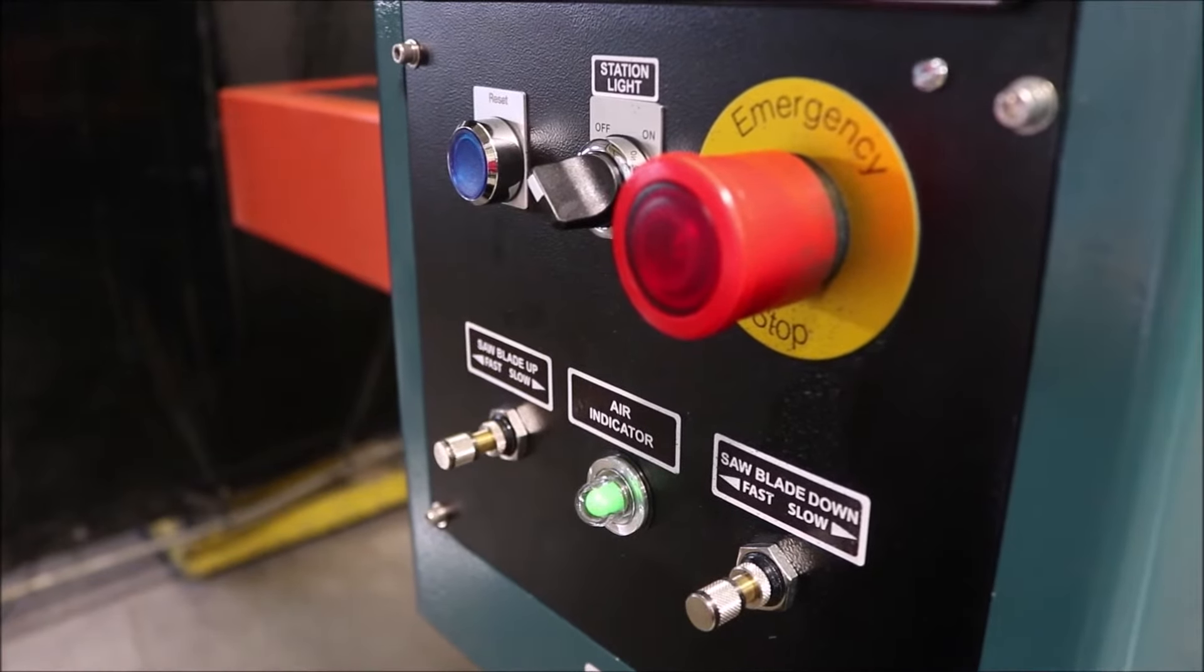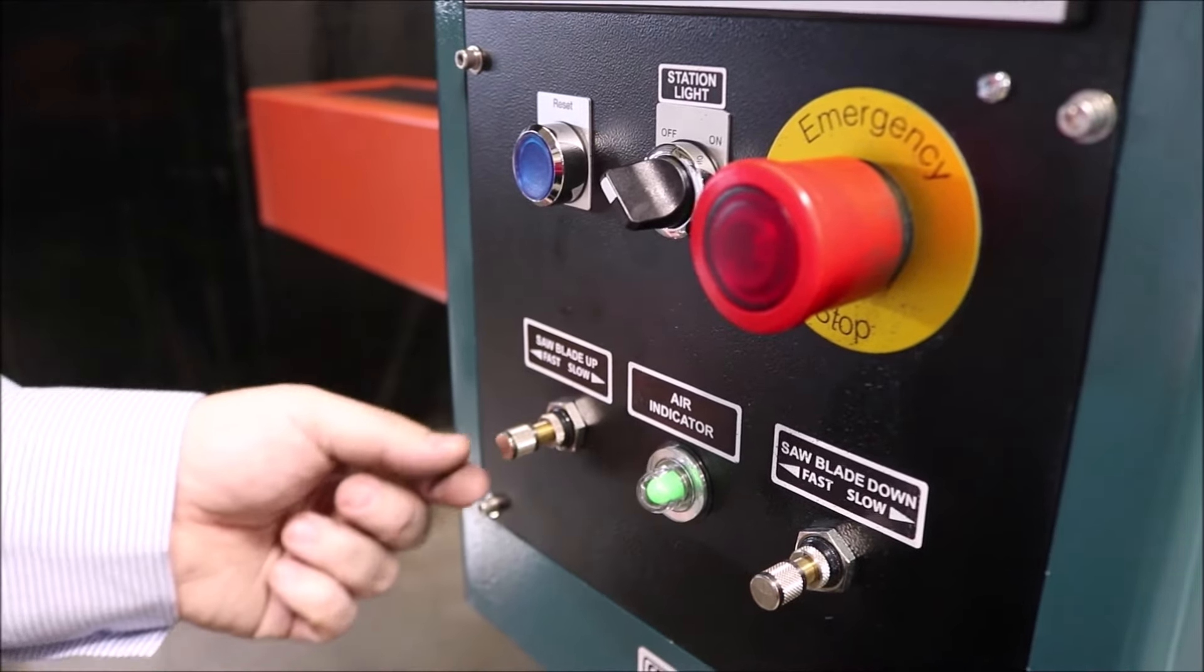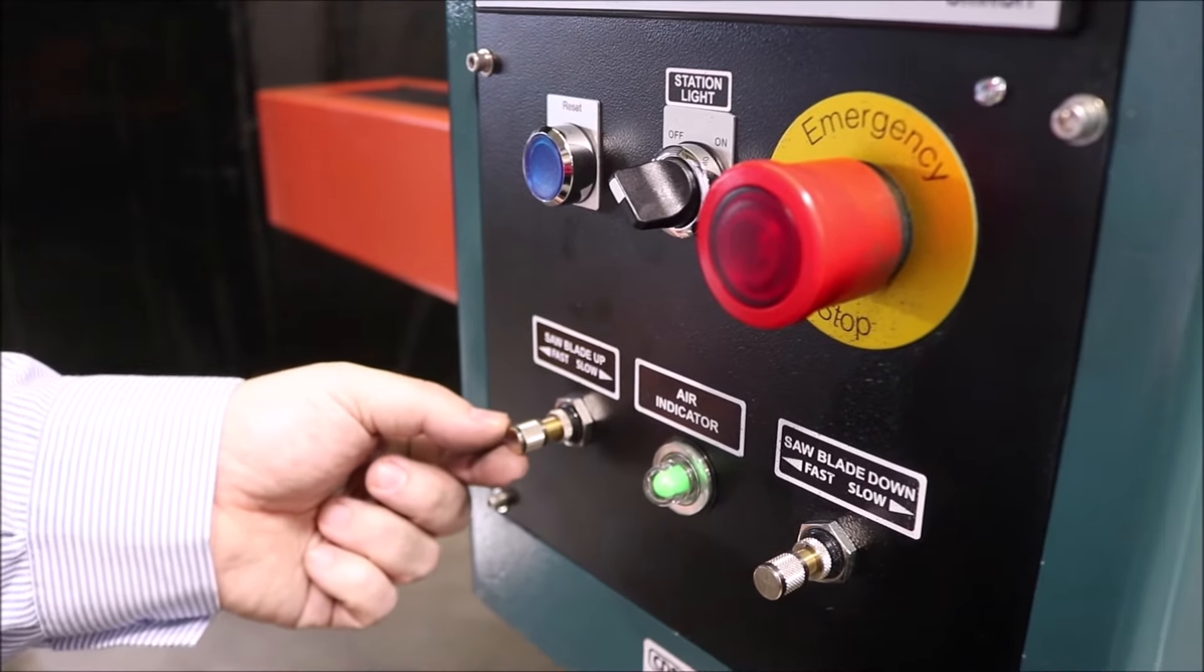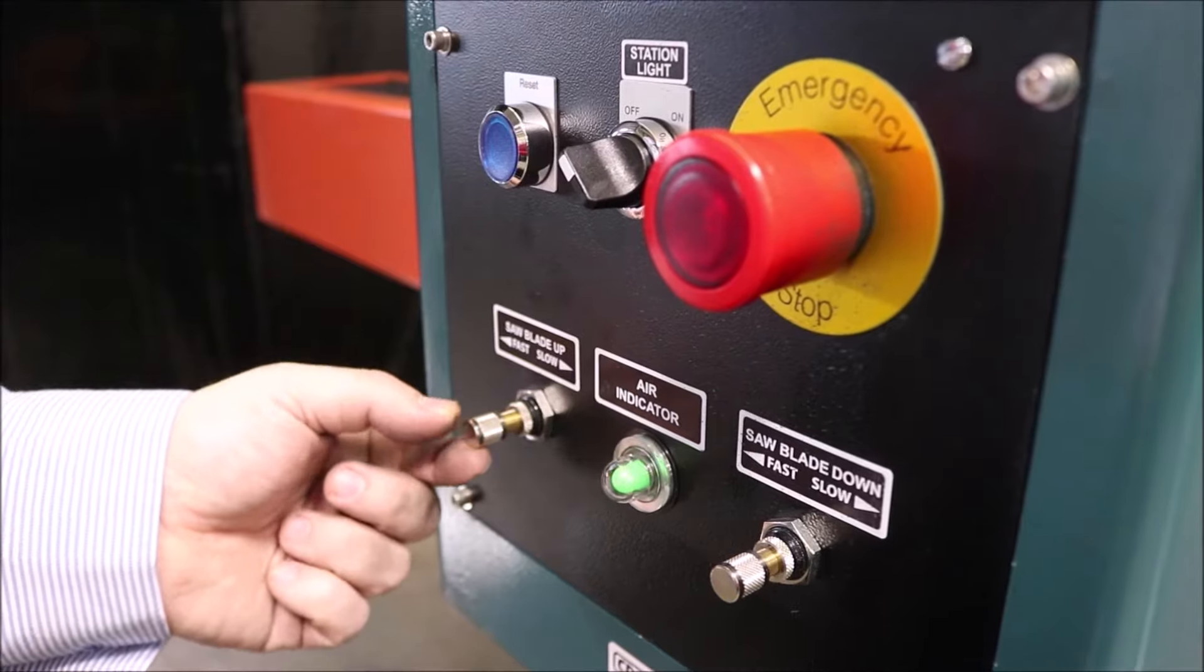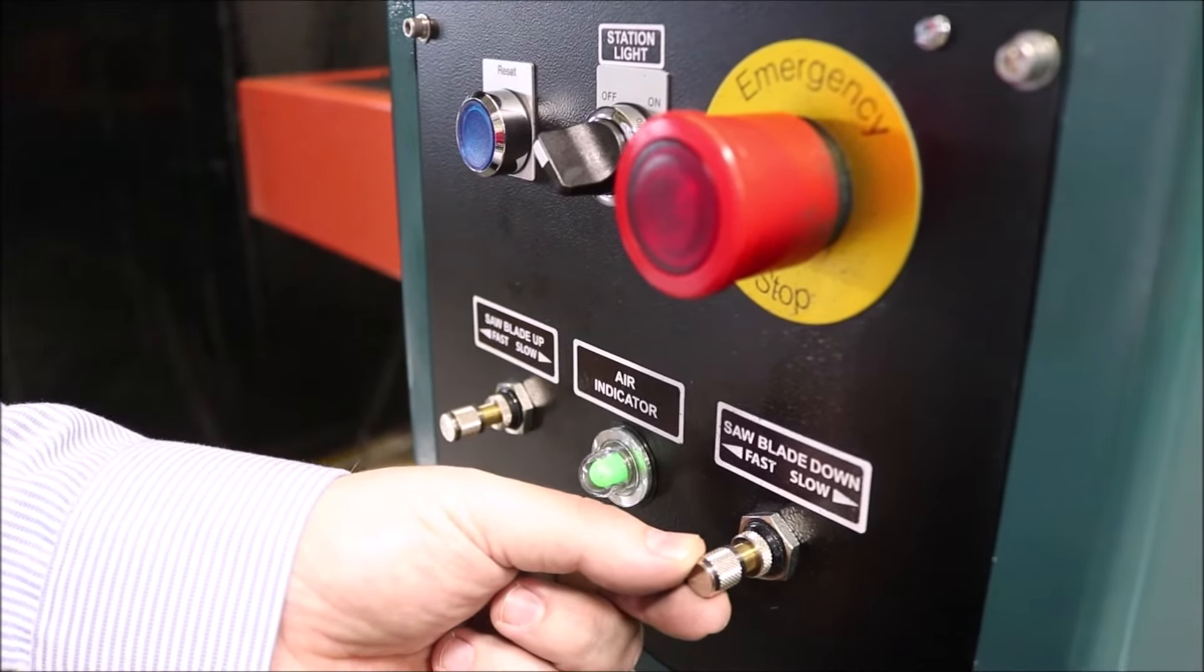The air control on a servo saw is pretty simple. You only have two controls. You have your saw blade up that you may make it go faster or slower, or you have your saw blade down that you may have it go faster or slower.